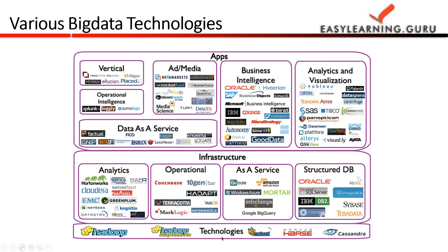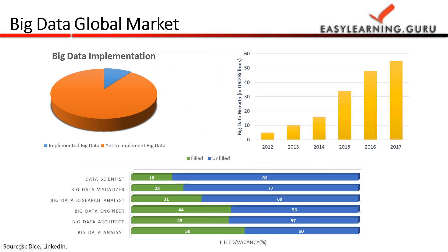At the top level are the applications, such as vertical apps, ad media, and business intelligence — under which firms like Oracle, SAP, IBM, and Cognos operate. These firms develop applications using the underlying infrastructure and technology, which processes and delivers the data in the required form for their products and services. Additionally, analytics, visualization, and data as a service all deal with the applications for users.